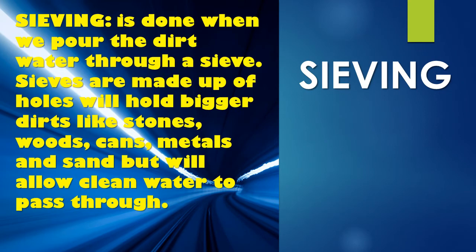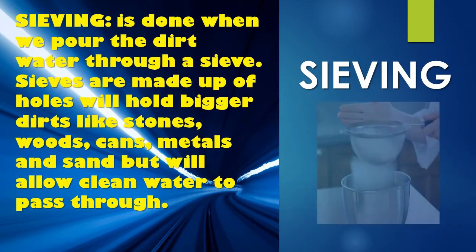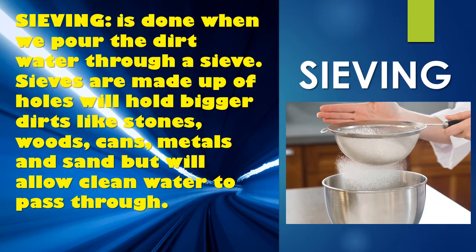Sieving is another method of purifying our water. It is done when we pour the dirty water through a sieve. It looks like the thing that people who prepare akamu pap use. So as you can see on my screen, that is the sieving method. You just put the water with the dirt through it. Once you put the water inside, the tiny holes will hold back the bigger deposits.